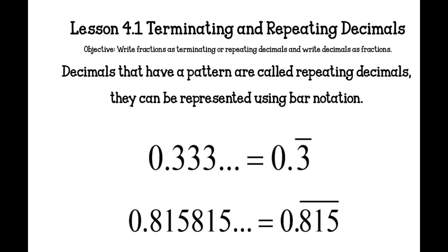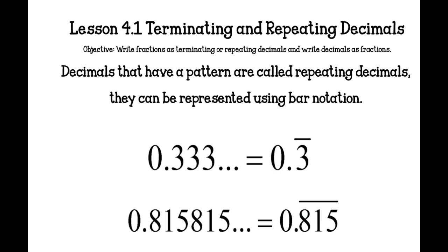Decimals that have a pattern are called repeating decimals. They can be represented using bar notation, which is this line right above the 3. For instance, when we have 0.3 repeating, it's easier if we just write 0.3 with a bar above it. And that shows that that 3 is going to go on forever, repeating forever.